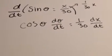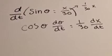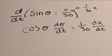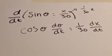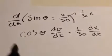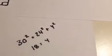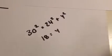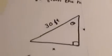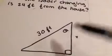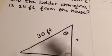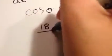Now that we've taken the derivative and we know it's going to be a snapshot, we can use the Pythagorean theorem to find cosine theta. We know x equals 24 and the hypotenuse equals 30, so 30² = 24² + y², which gives y = 18. And y is what we need for cosine — we've got the adjacent side, the angle, and the hypotenuse.